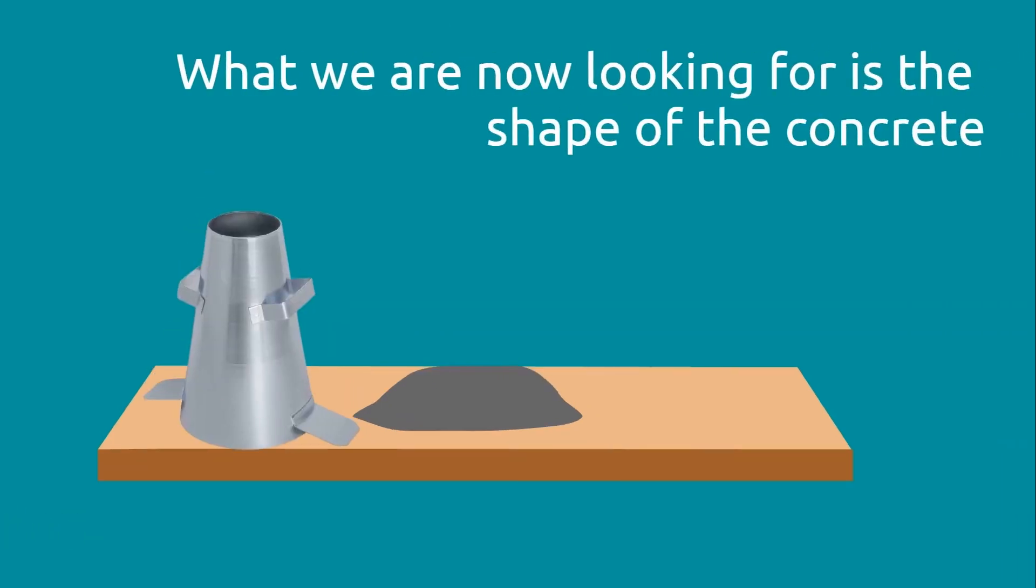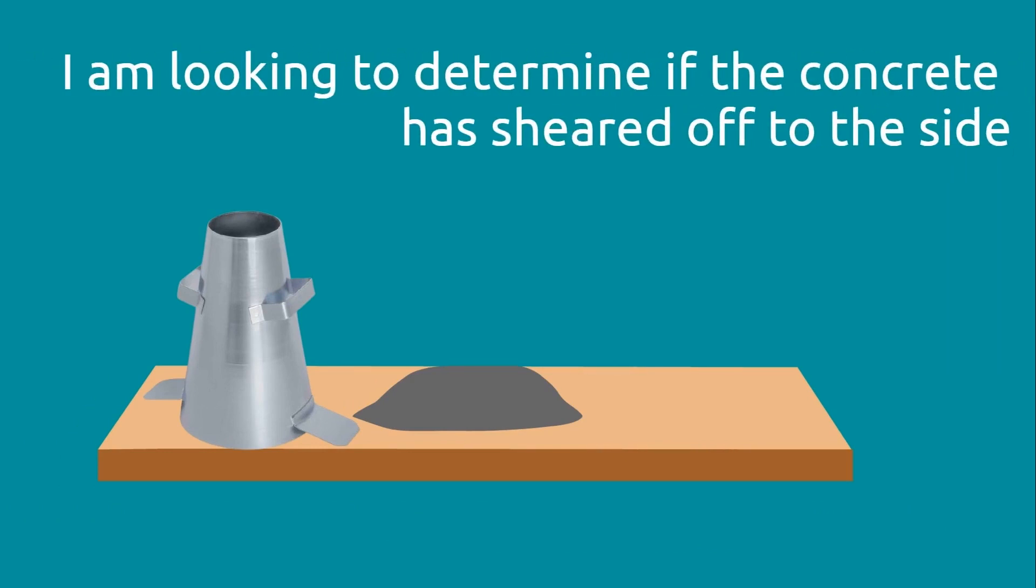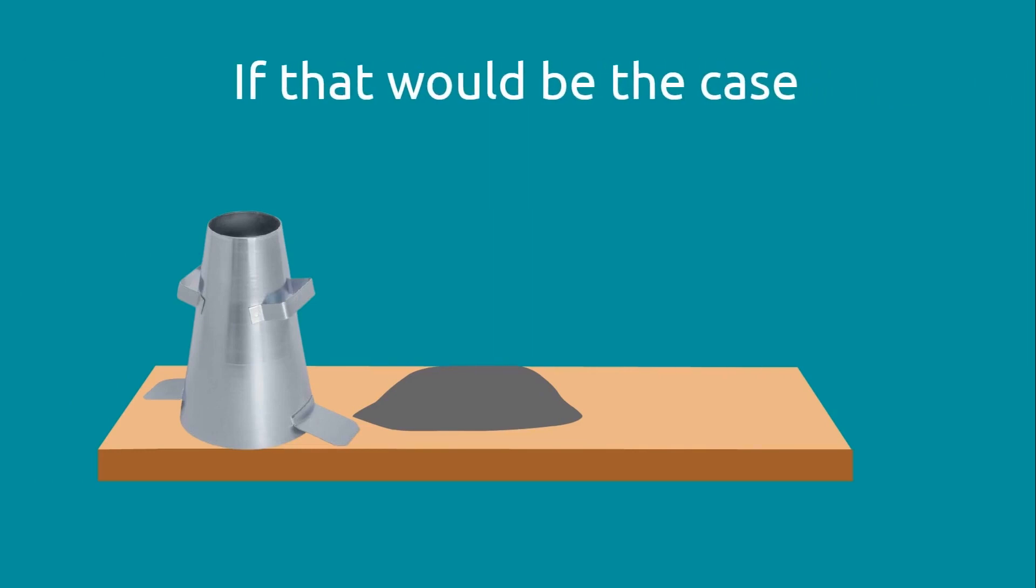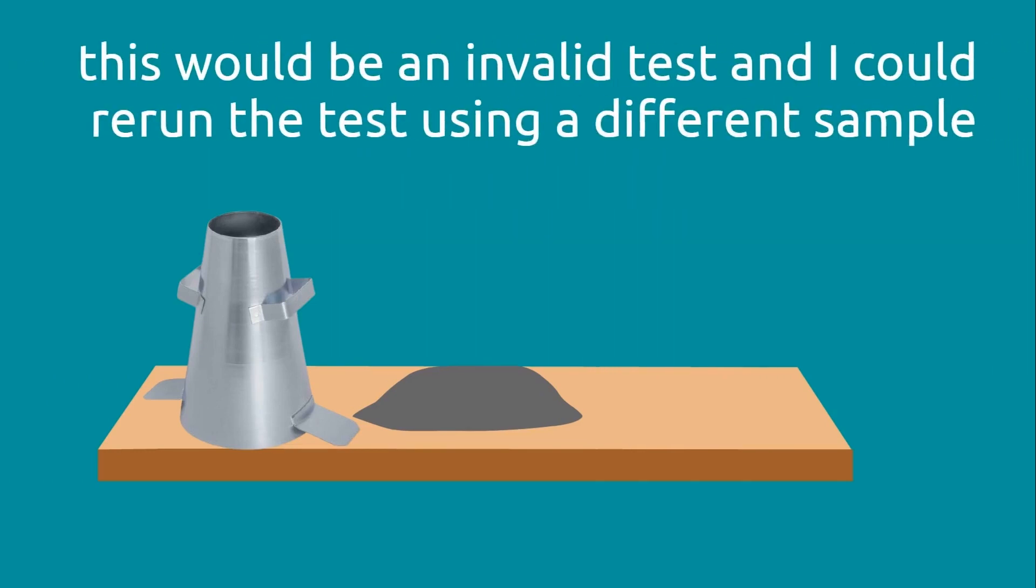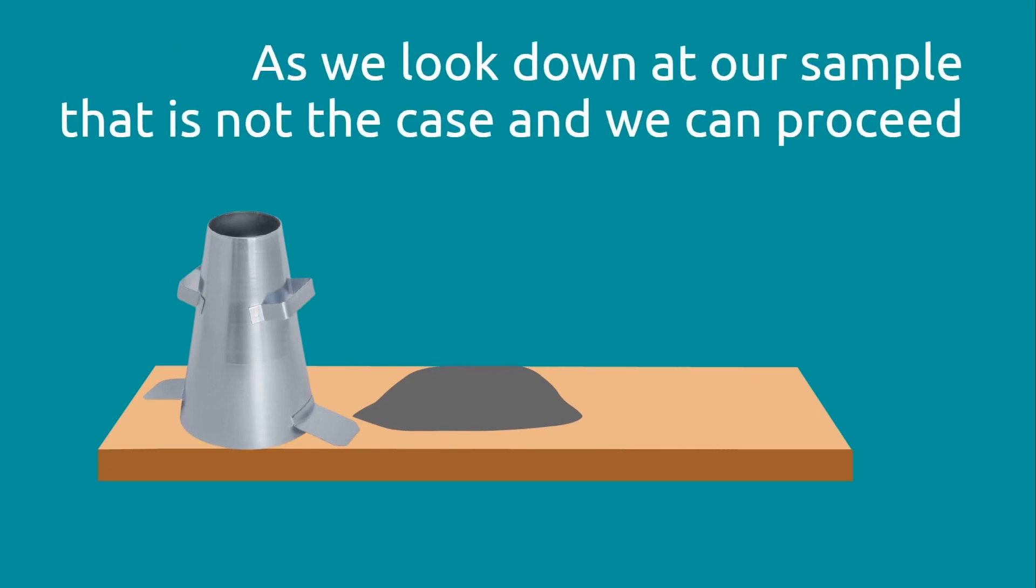What we are now looking for is the shape of the concrete. We need to determine if the concrete has sheared off to the side. If that would be the case, this would be an invalid test and we could rerun the test using a different sample. As we look down at our sample, that is not the case and we can proceed.